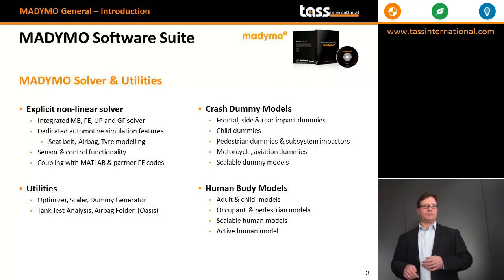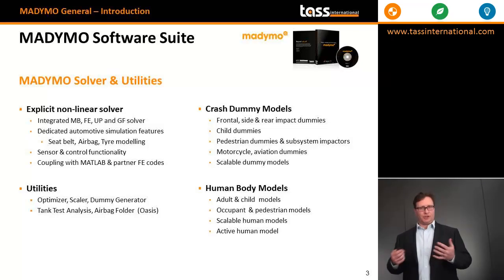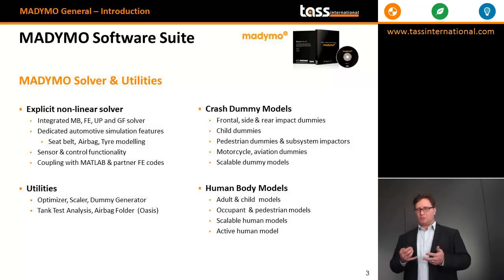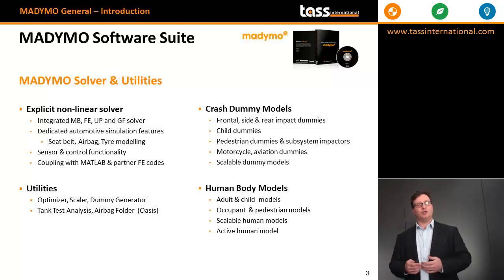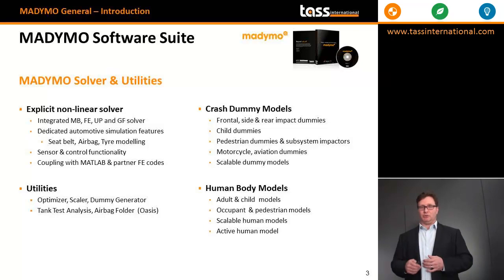The Madimo software suite consists of explicit non-linear solvers and several utilities, as well as the crash test dummy models and the human body models. The crash test dummy model portfolio contains models for frontal, side and rear impact, but also for child safety and scalable dummy models to have dummies for any human posture. The human body models consist of adult and child models, scalable human models, as well as the active human model.